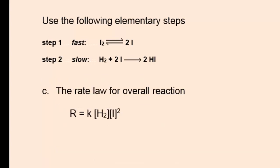Determining the rate law for this reaction is a little more complex than the previous example, because in the slow step there is an intermediate — the iodine atom. The initial rate law that we present involves this intermediate iodine atom, but because it's an intermediate, it cannot appear in the overall rate law for the reaction.